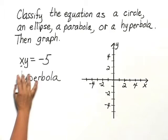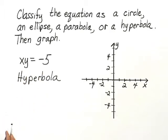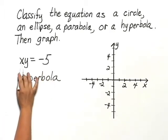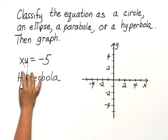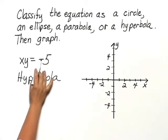And to graph it, this is going to consist of two branches. And let's find a couple of points. 1 times negative 5, negative 5 times 1 will both equal negative 5.